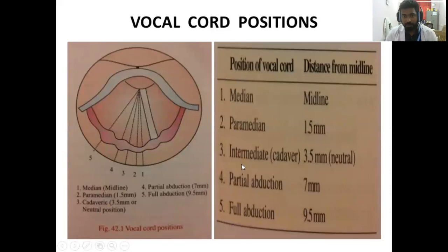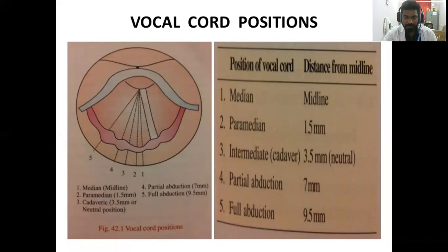The vocal cord positions: if the vocal cord is exactly in the midline, it is called the median position. If it is 1.5 millimeters lateral from the midline, it is called the paramedian position. If it is 3.5 millimeters from the midline, it is called the cadaveric position — the position assumed in cadavers when both nerves are paralyzed. Partial abduction is 7 millimeters from the midline, and full abduction is 9.5 millimeters from the midline.